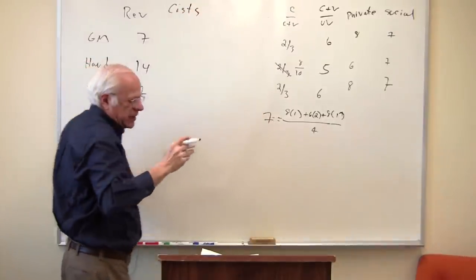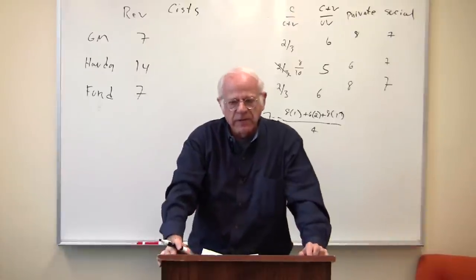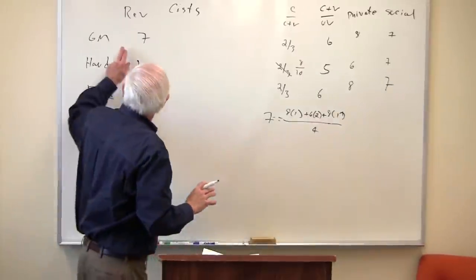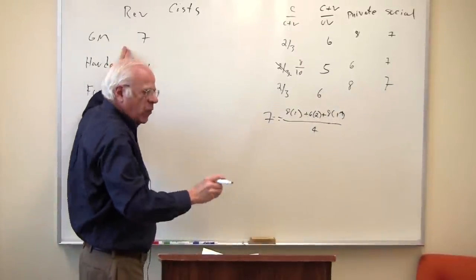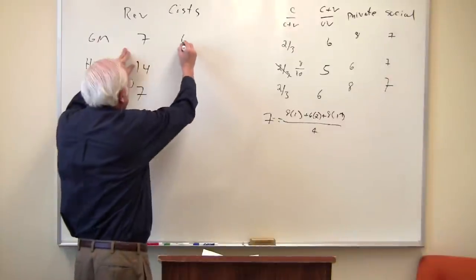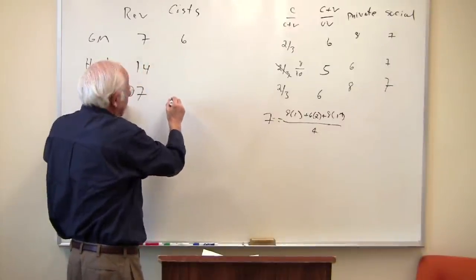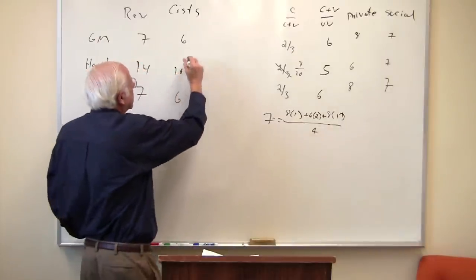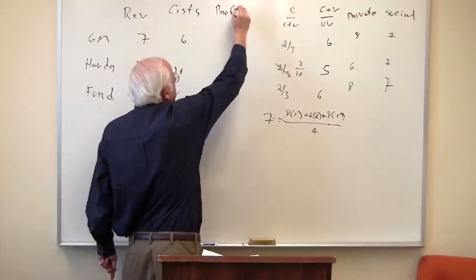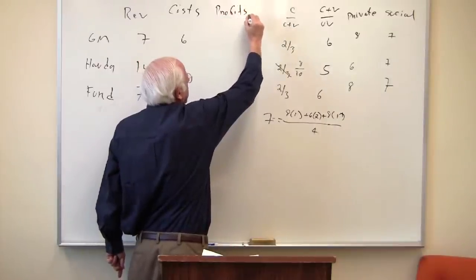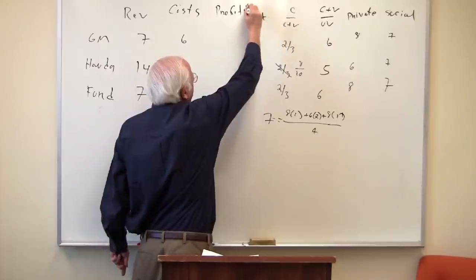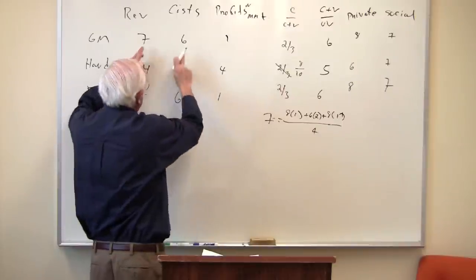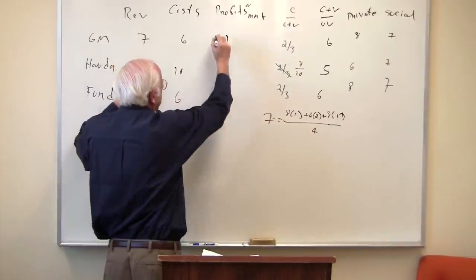The cost in the table that you've taken down, or you're looking at now, is for GM 4 plus 6, Ford 4 plus 6, Honda is 8 plus 2, is 10. So the new profits in the market, this is the new profit, the result of this, is 1, 4, 1. 7 minus 6, 7 minus 6, 14 minus 10. Look at this.